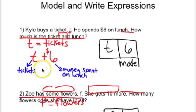We also described what the $6 represent. And it represented the money that was spent on lunch. Then we went into our models. And we saw that we are adding, so we're joining two groups.